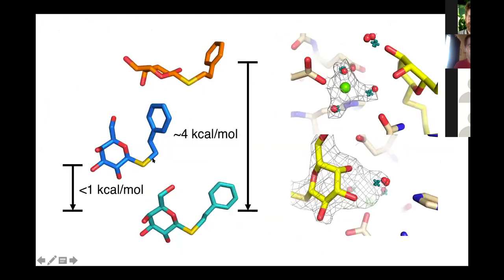Looking at the different poses produced and their relative energies: the pose for 5A1A and the GEMspot poses are all about 1 kcal/mol or less higher in energy than the global minimum, and the conformation is quite similar. The 6CVM pose, however, is not a global minimum — there's conformational strain in one torsion, making it about 4 kcal/mol higher in energy. Energetically speaking, this is a relatively unlikely pose.